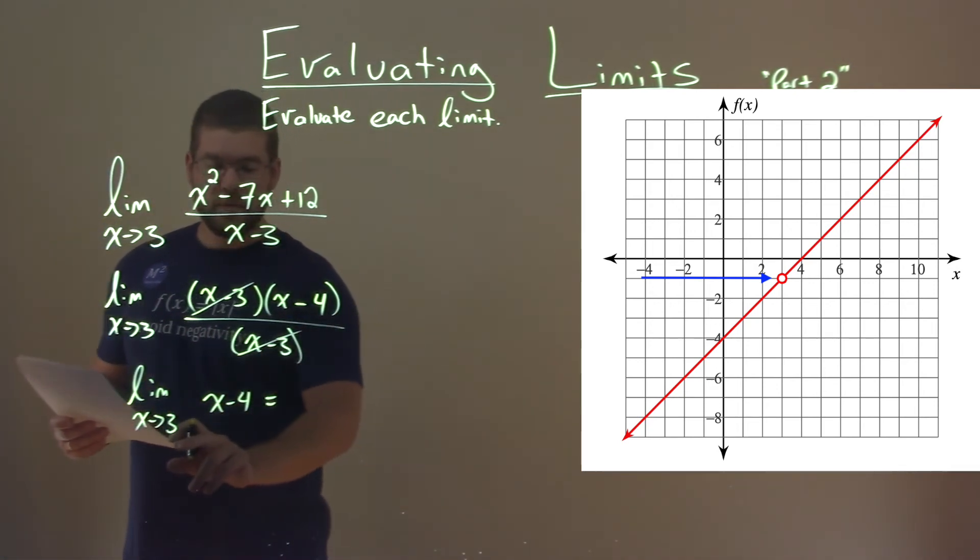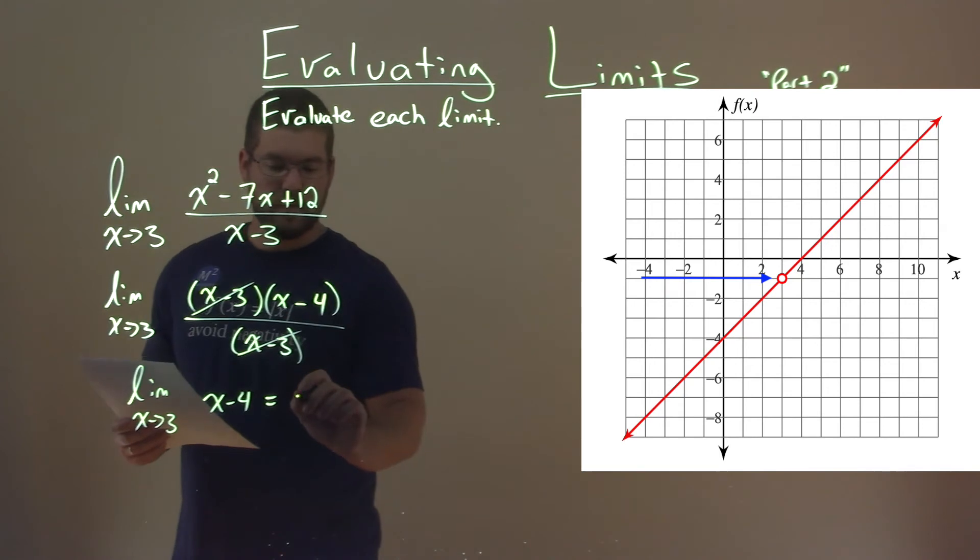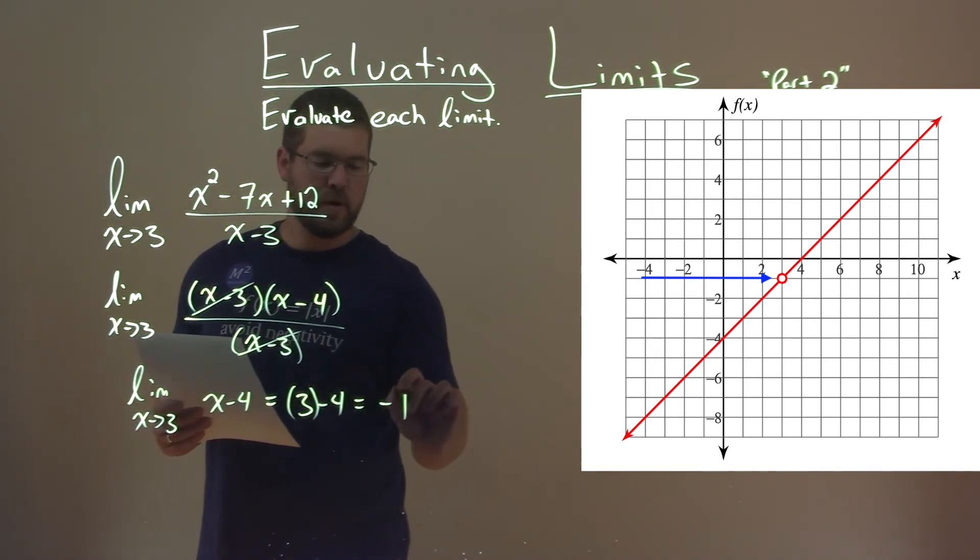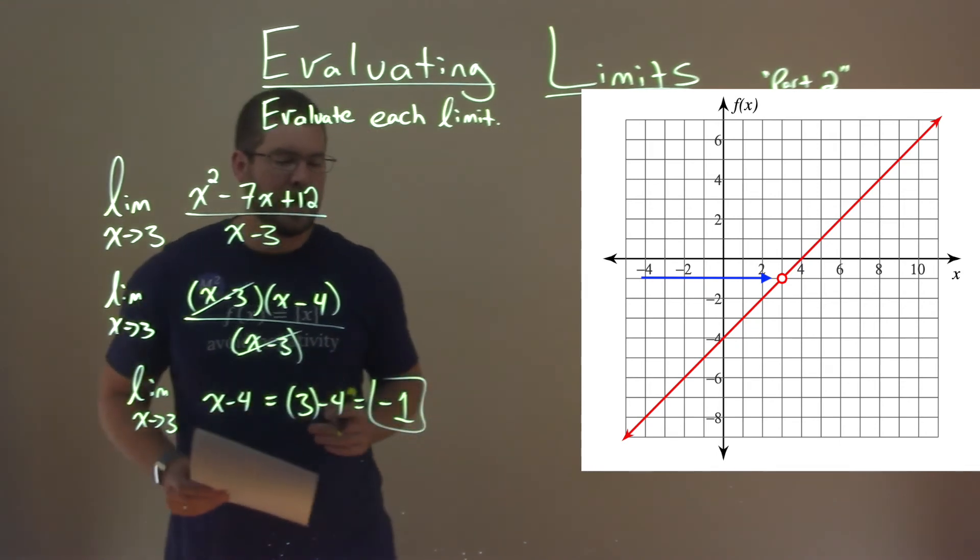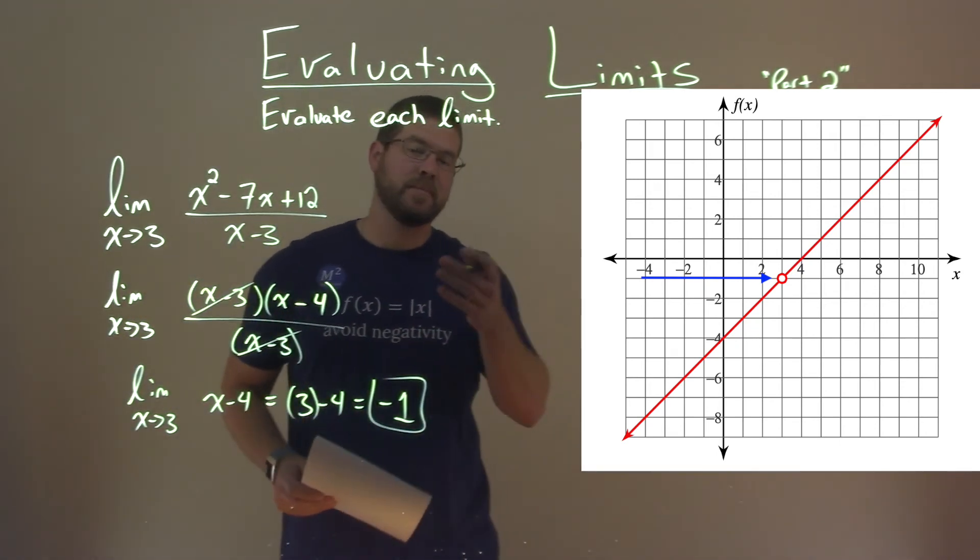Now we can evaluate this limit. Let's put 3 in for x. We have 3 minus 4, and 3 minus 4 is negative 1. And so, like I said, our limit here equals negative 1.